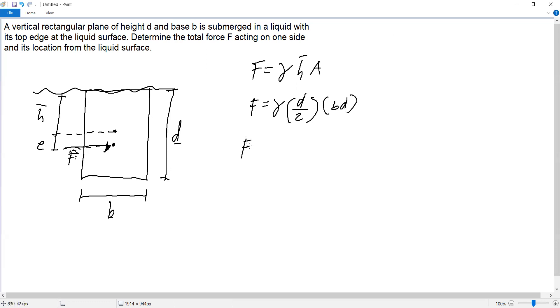So the force is gamma times BD squared over 2, or F equals one-half gamma BD squared. So this is the force.